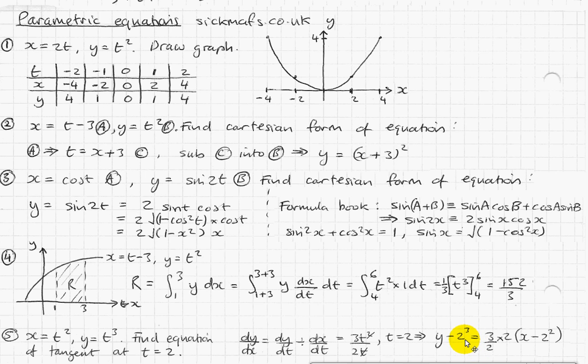Basically, where y1 and x1 are a coordinate on the line. So what is a coordinate on the line? Well, when t equals 2, x equals 2 squared, and y equals 2 cubed, which I've written there, basically.